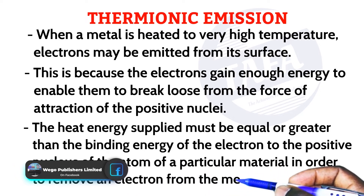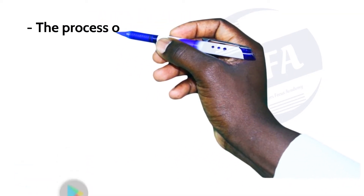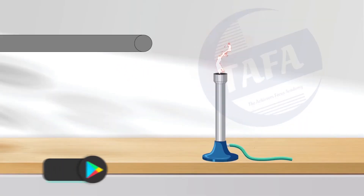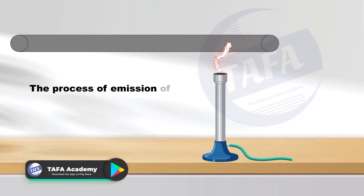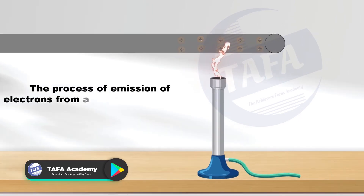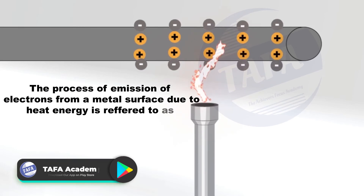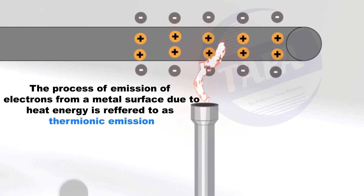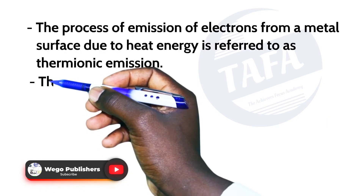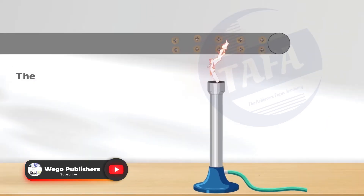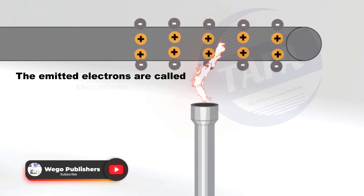The process of emission of electrons from a metal surface due to heat energy is referred to as thermionic emission. The emitted electrons are called thermions.